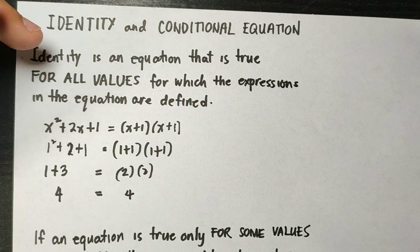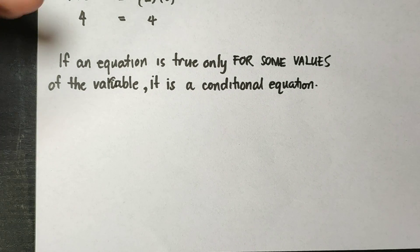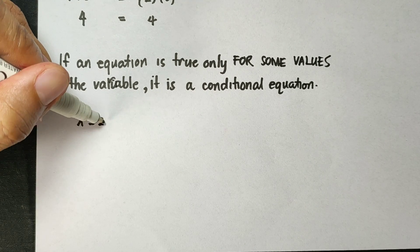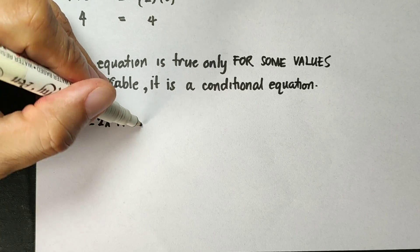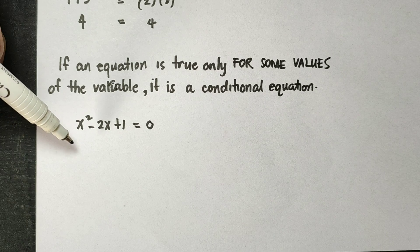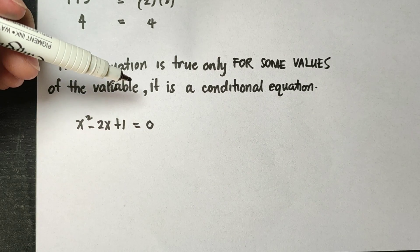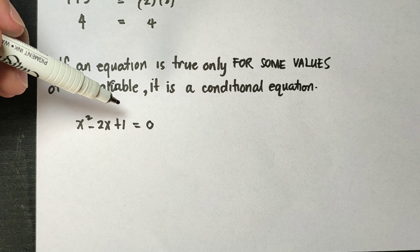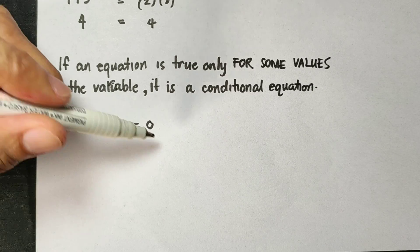What about the conditional equation? For example, we have x squared minus 2x plus 1 equals 0. This will always be equal when x is only equal to positive 1. But when x is negative 1, this will not be equal.